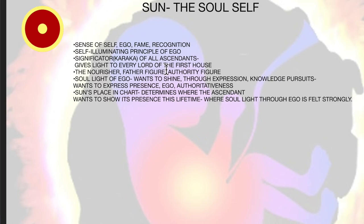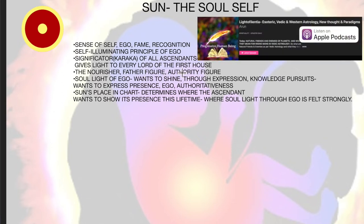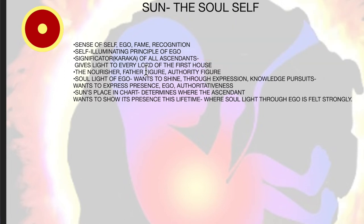The sun gives light to every other lord of the first house. For all the 12 ascendants, sun shines in the first house. It's the karaka, the significator. It's also the nourisher, the father figure, the authority figure. Sun loves authority. It loves direction towards itself — that's the ego. Ego loves direction towards itself. It says 'look at me.' The 'look at me' principle of the ego is the sun. It's the soul light of the ego. It wants to shine through expression, knowledge, pursuits — it wants to express presence, ego, and authoritativeness.